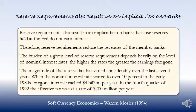The magnitude of the reserve tax has varied considerably over the last several years. When nominal interest rates soared to over 10% in the early 1980s, foregone interest reached $4 billion per year. In the fourth quarter of 1992, the effective tax was at a rate of $700 million per year.